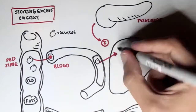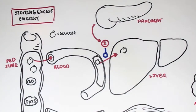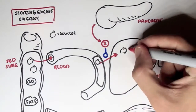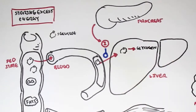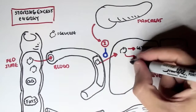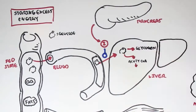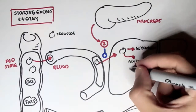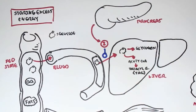The pancreas will then secrete insulin. Insulin will promote the uptake of glucose from the blood into the liver, and will also promote the conversion of glucose to glycogen — the storage unit of glucose. Insulin will also promote the conversion of glucose to pyruvate and then to acyl-CoA by glycolysis.